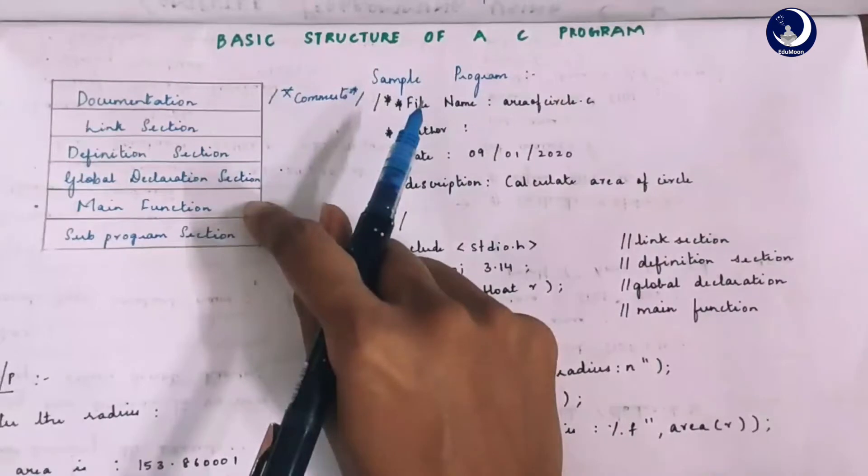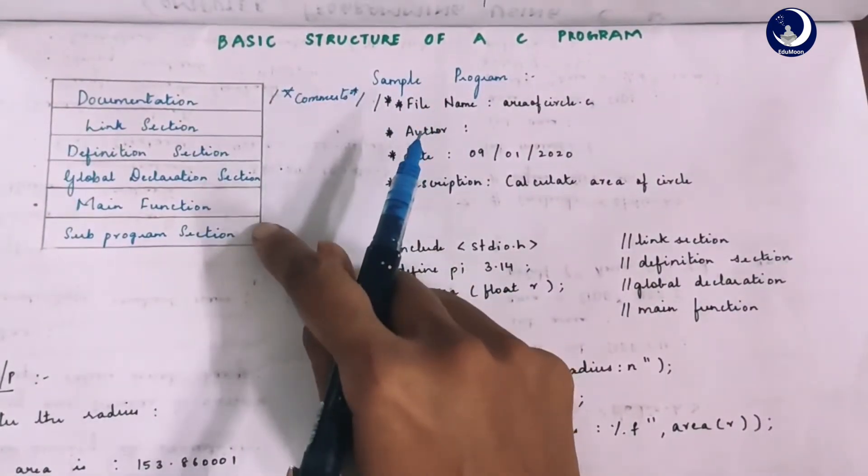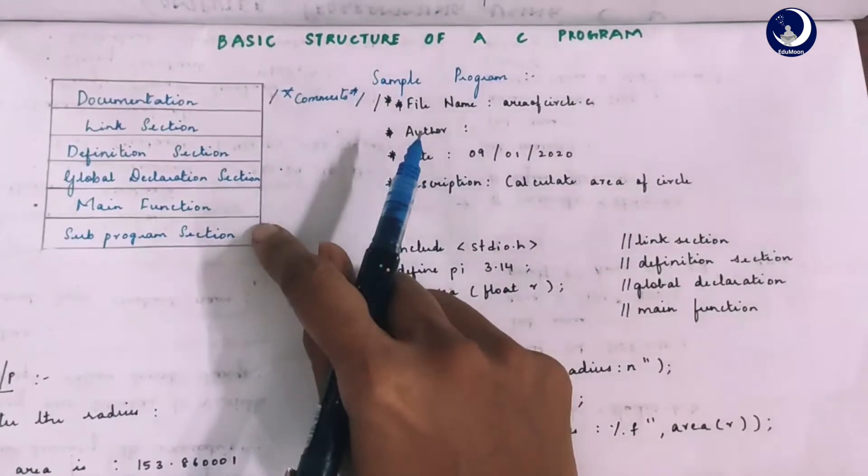The declaration section contains local declarations for the main function and the executable section contains actual executable instructions for the program. The last section is the subprogram section which contains one or more user defined functions.